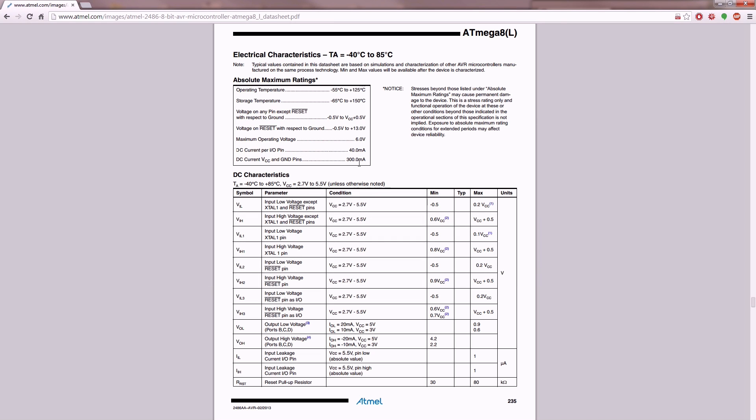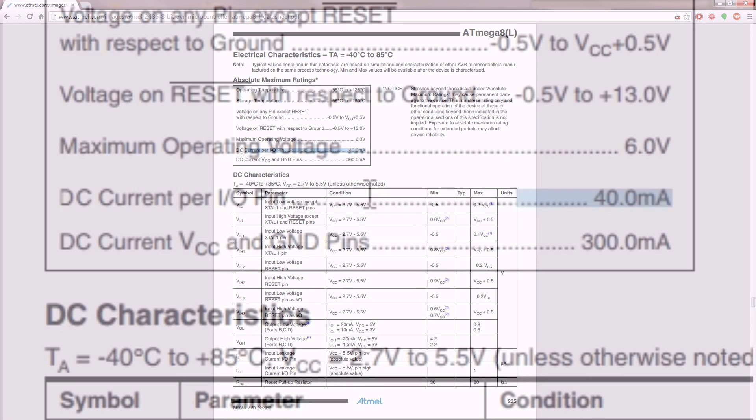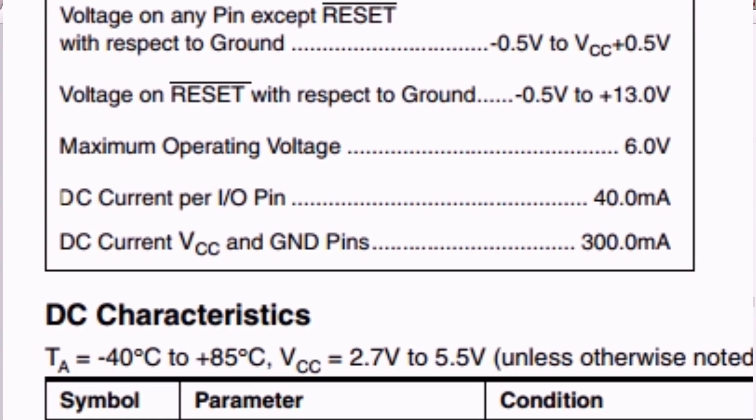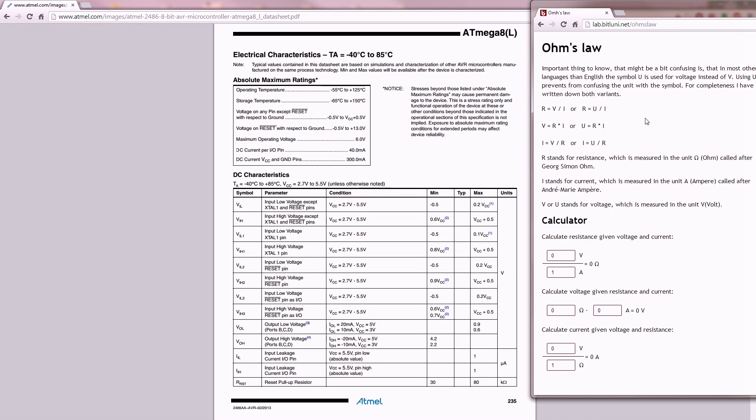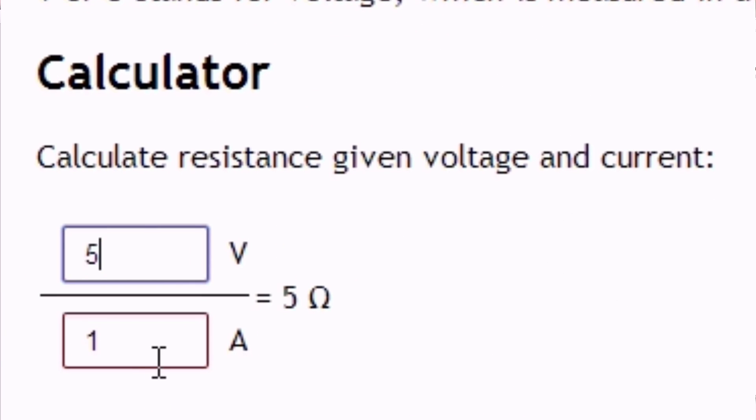But if you want a simple circuit, you just take a look in the datasheet. You get the maximum current for each pin. For this ATmega, it's 40 milliamps. With the Ohm's law, we can calculate when we are running the circuit on 5 volts and 40 milliamps, then the resistance between the high pin and the ground has to be at least 125 ohms.